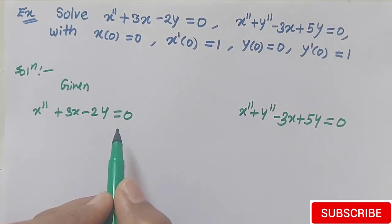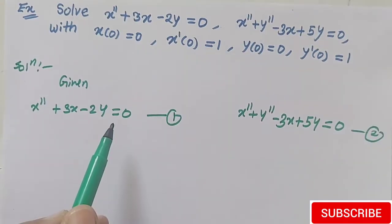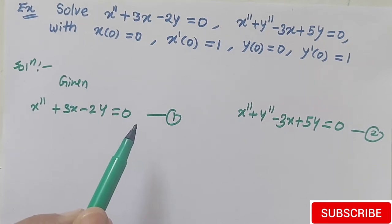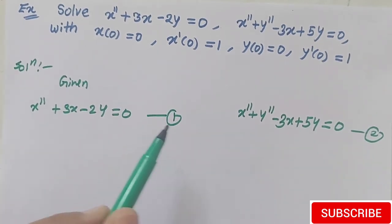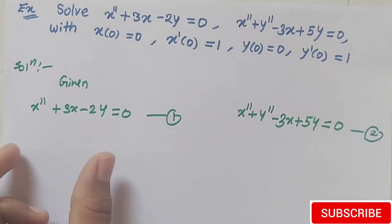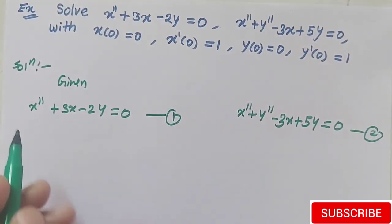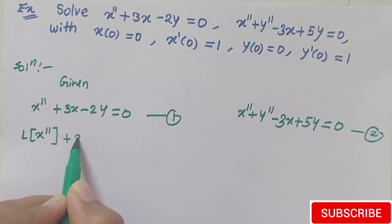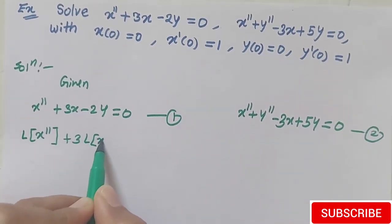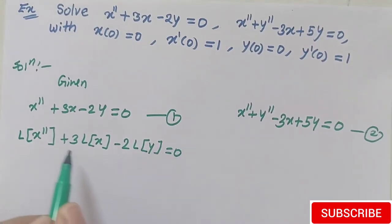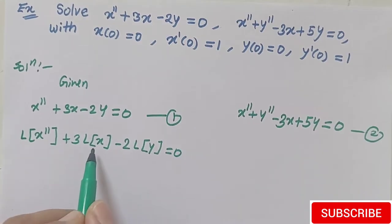To solve this equation, in the first step we have to apply the Laplace transformation to both sides. As I discussed in the last lecture, I have already covered the steps of solving simultaneous differential equations. If you don't know that, watch the previous video — the link is given in the description box and also at the end of this video. Now in the first step we apply the Laplace transformation: Laplace of x double dash plus 3 times Laplace of x minus 2 times Laplace of y equals to 0. Since Laplace is linear, we take each term separately and constants outside.